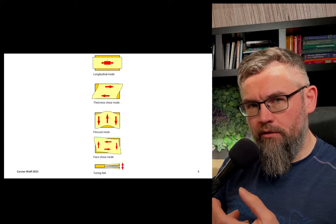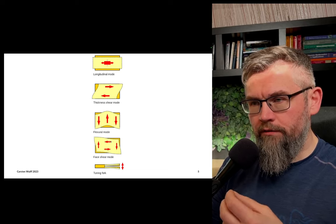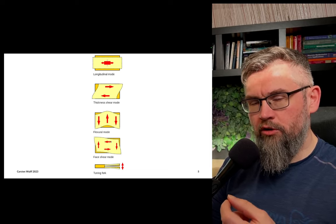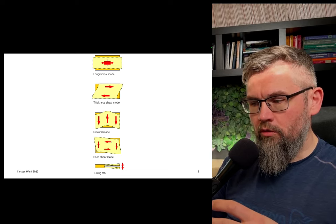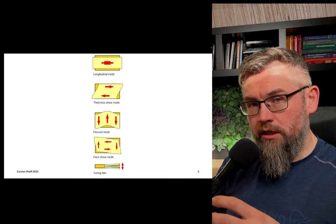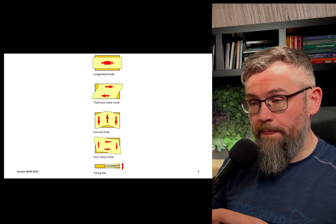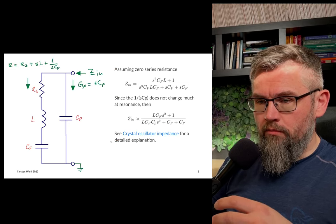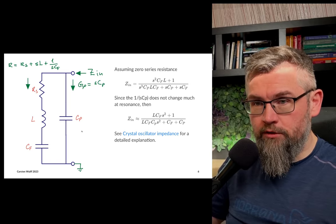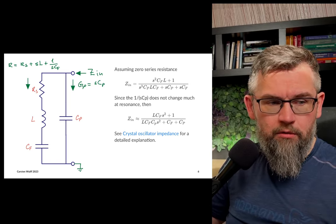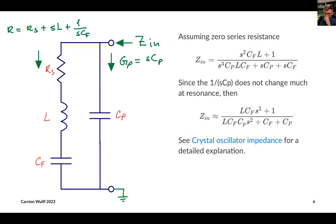The cool thing about crystals is the frequency is mostly determined by the structure of the actual crystal and the material. So the resonance frequency can be extremely precise. The model that we use for crystals usually looks like this. Let me go full screen. We model the mechanical resonator, this crystal, as a parasitic capacitance.